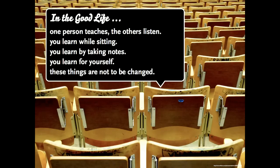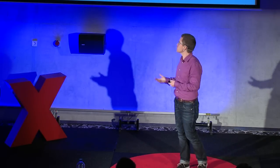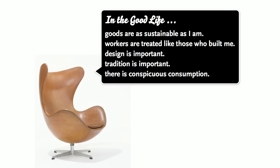A good life in which teaching and learning is about one person teaching and the others listening. In which learning is done while sitting. In which you learn for yourself, and you are not supposed to change these rules because the chairs are fixed to the ground. And even something as innocuous as a single design chair, like this one by Arne Jacobsen, is a persuasive technology. Because again, it communicates an idea of the good life — a life that you as a designer consent to by saying, in a good life, goods are produced as sustainably or unsustainably as this chair. Workers are treated as well or as badly as the workers who built that chair. Design is important because somebody took the time and spent the money for that kind of well-designed chair. And where there is conspicuous consumption — where it is okay and normal to spend a humongous amount of money on such a chair to signal to other people what your social status is.